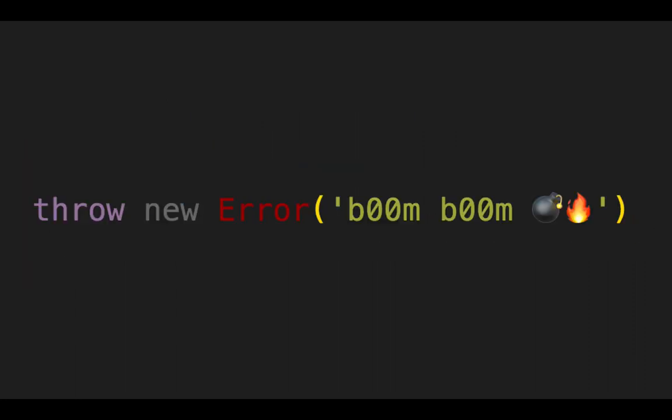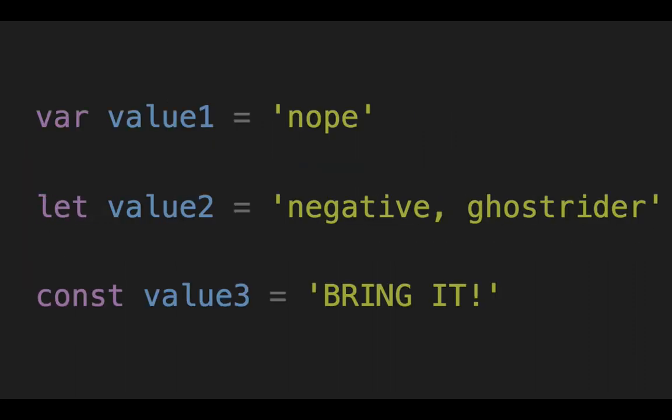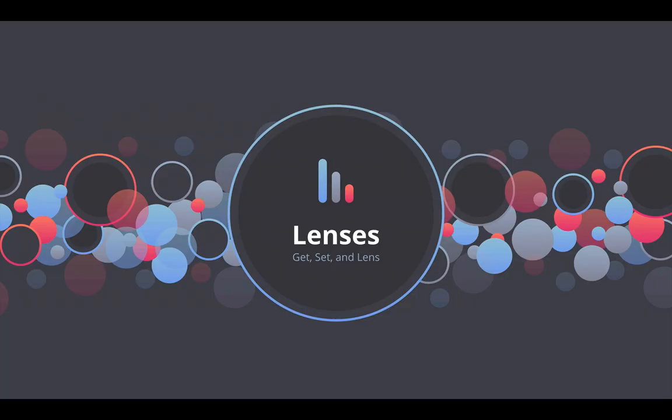Don't throw errors — bad news, we already talked about that. Don't use var, don't use let. Const is okay, it's good but not great. Now that you understand pure functions, the rules around same input, same output, and what not to use — let's talk about lenses.